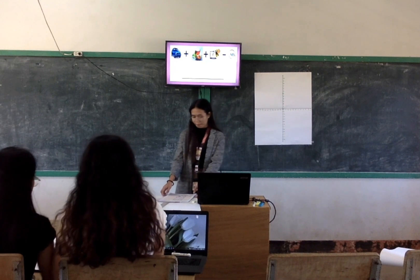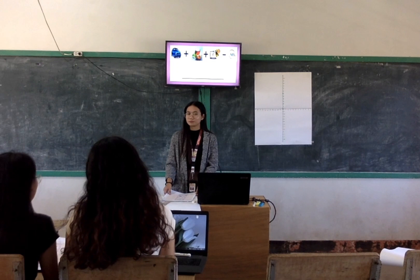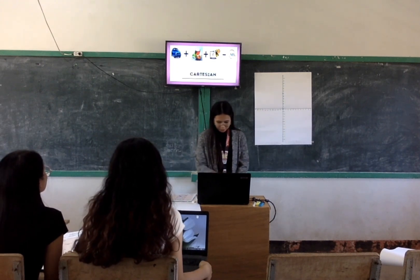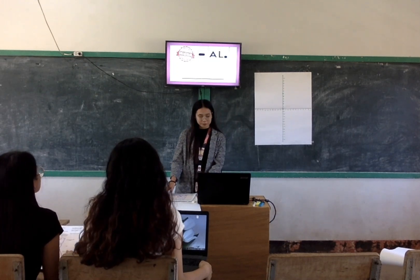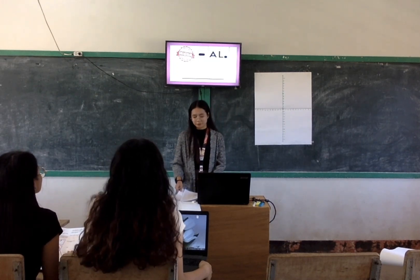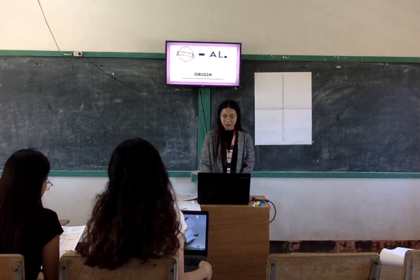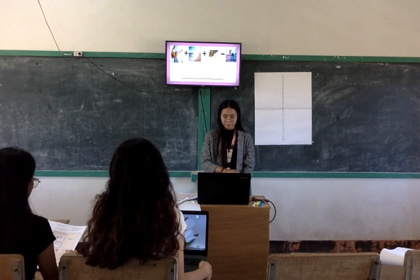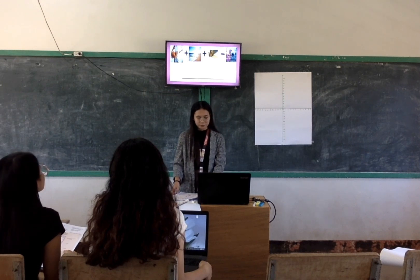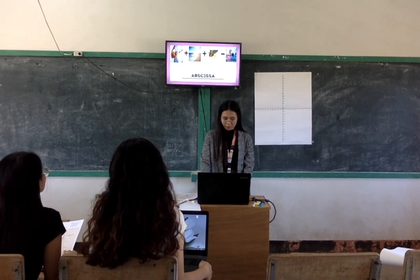First picture — what is that? Cartesian. Let me see — that's correct, it is Cartesian. The next one — Origin. That's correct also, that is Origin, because original minus 'al' is Origin. Next — Abscissa. Right, Abscissa.